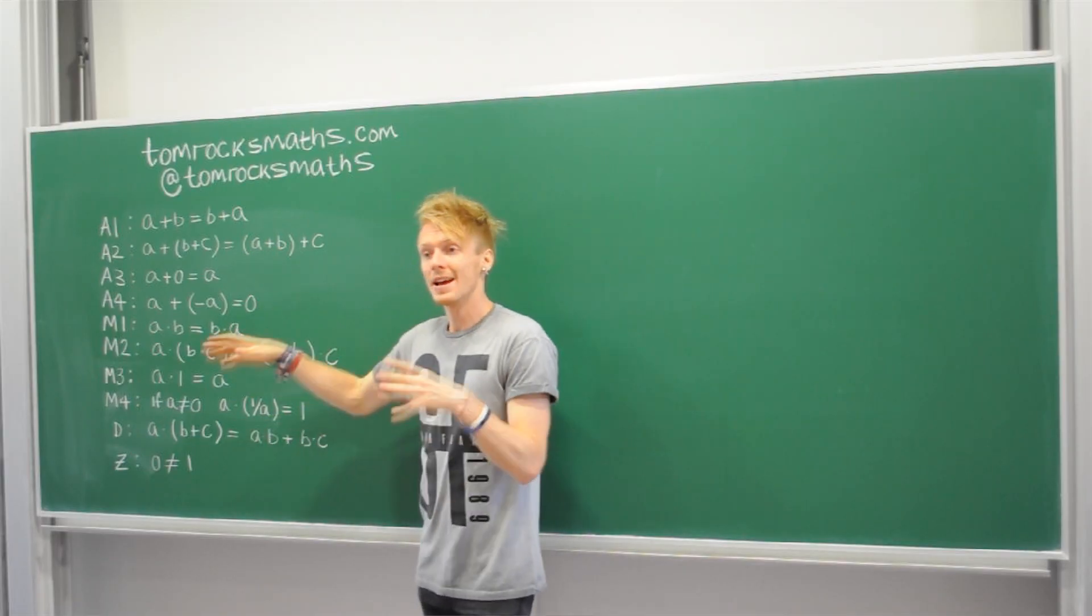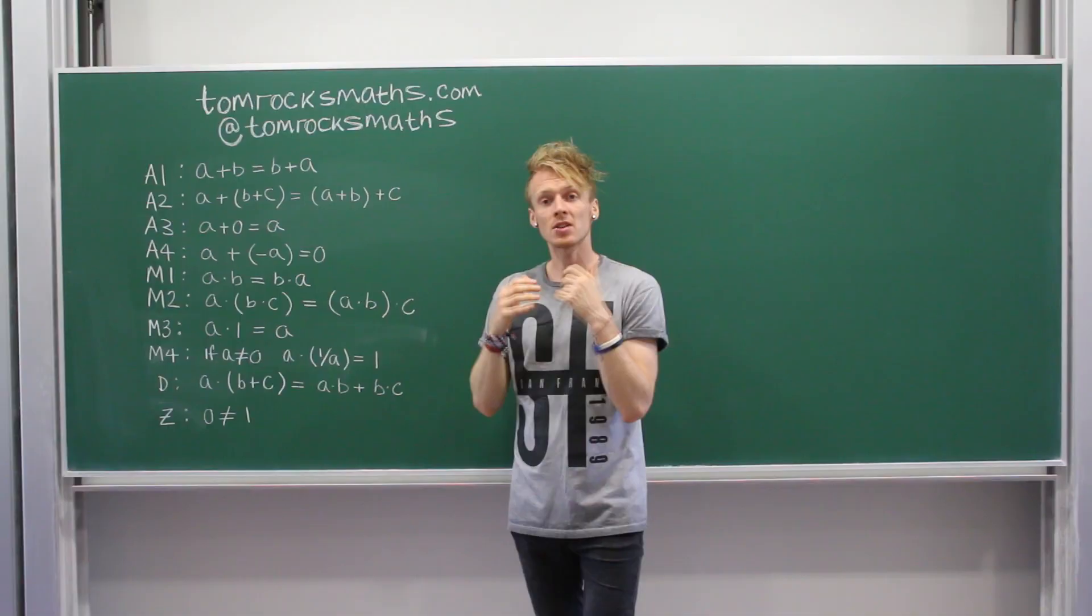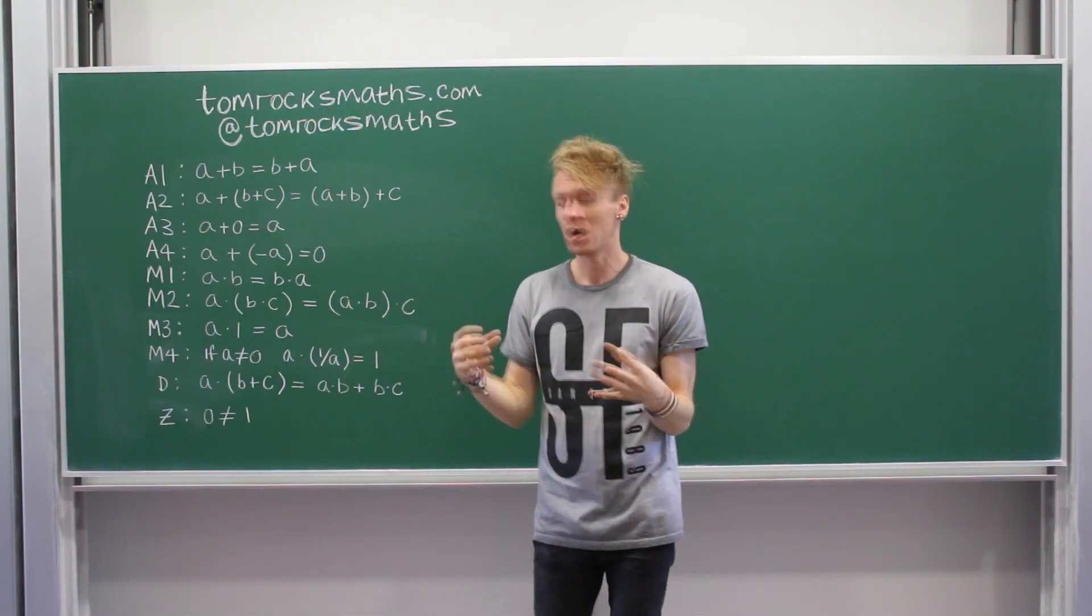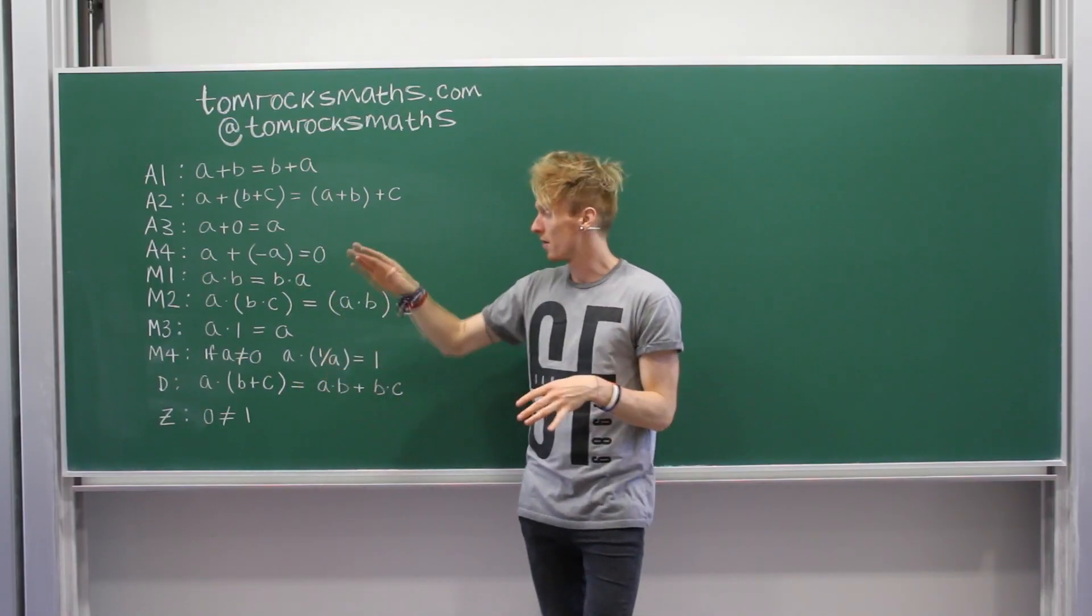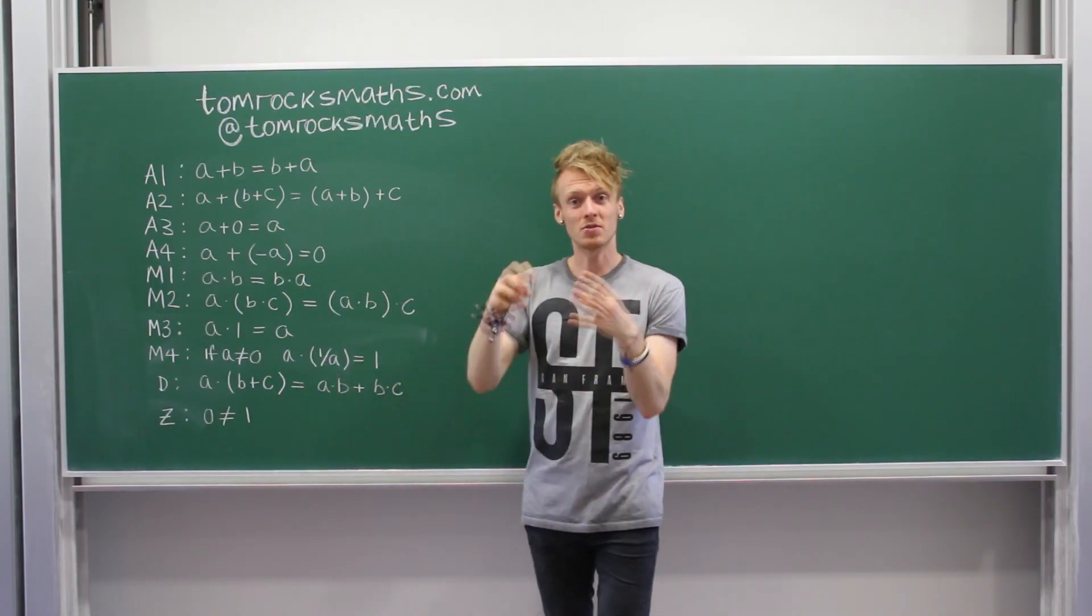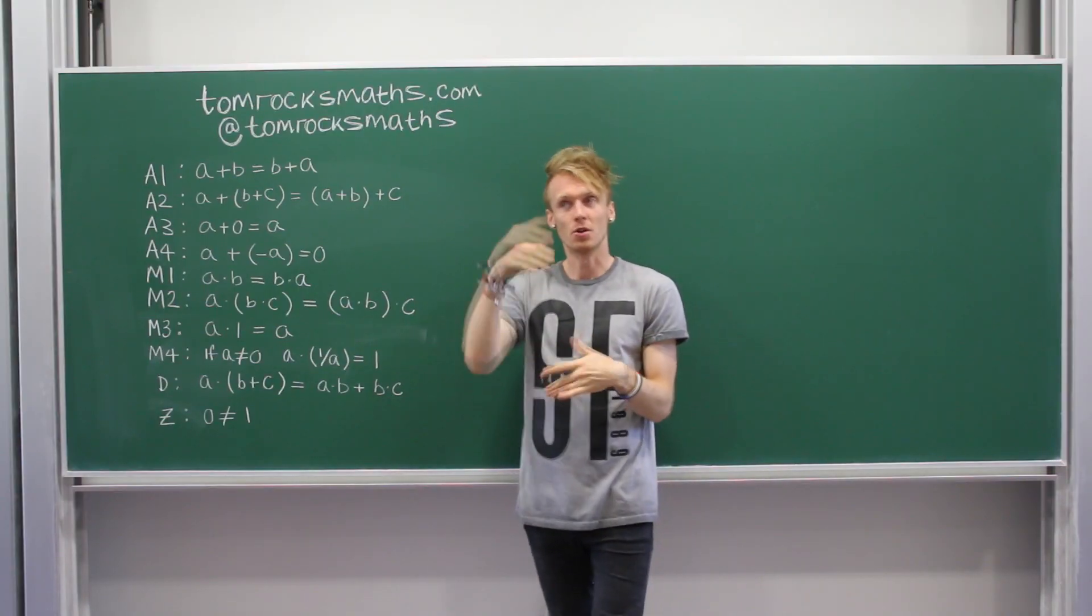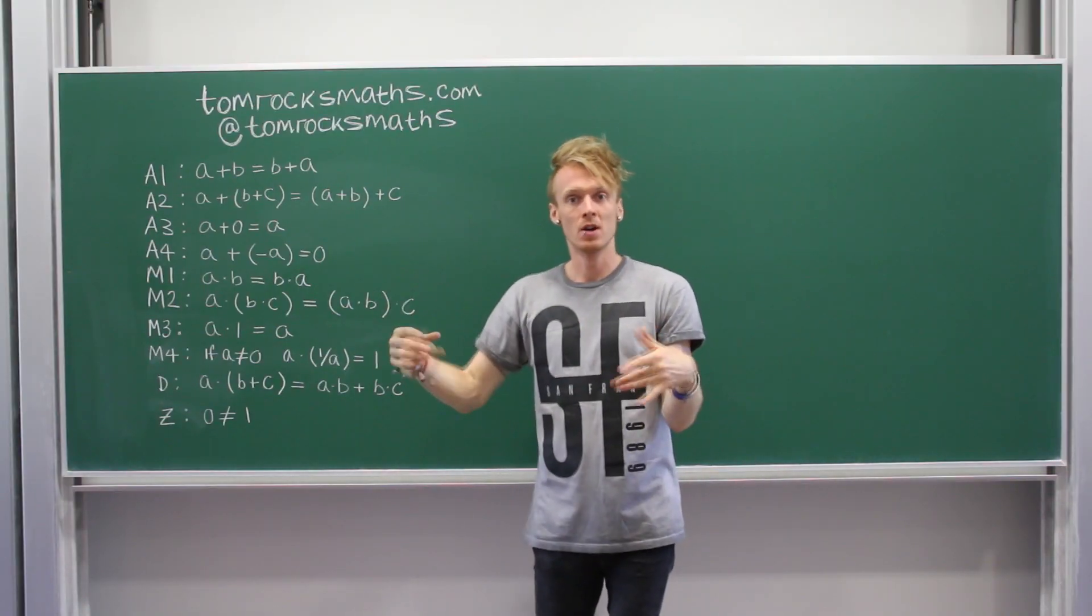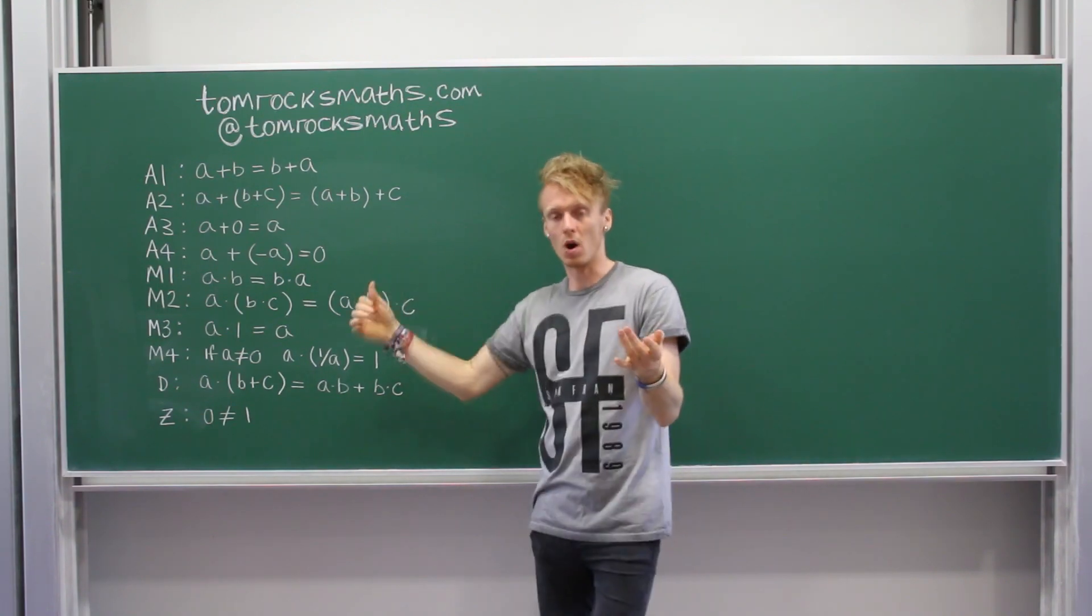Then M4 is going to define your multiplication inverse. So for A4, an addition, you add the negative of your number, you get zero, the identity. For multiplication, you have to take your original number A, multiply it by its reciprocal. So one divided by that number. So two times one divided by two, a half, equals one.